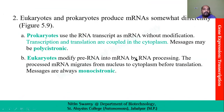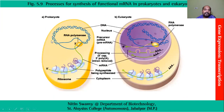Now we will see some more differences. In prokaryotes the RNA transcript has no modification, transcription and translation are coupled reactions in the cytoplasm, and the message may be polycistronic. In eukaryotes, pre-mRNA has to be modified into mRNA by RNA processing. The processed mRNA migrates from the nucleus to the cytoplasm before translation, and messengers are always monocistronic. In this diagram of a prokaryotic cell, we can see there is RNA polymerase making mRNA which is immediately coupled with ribosomes and making proteins.